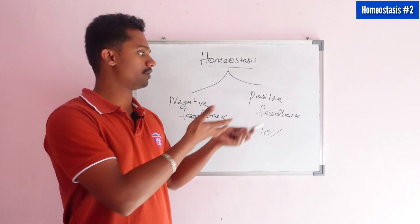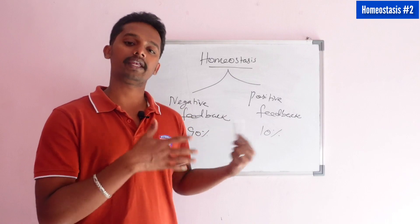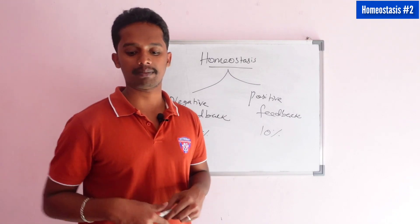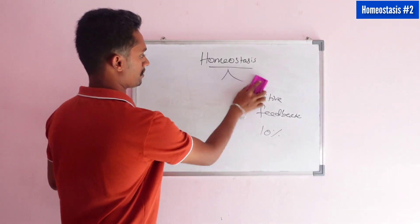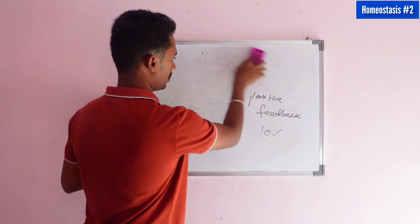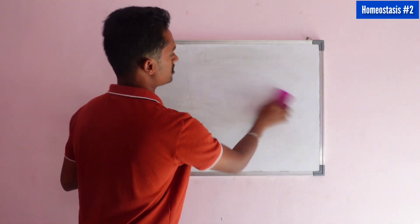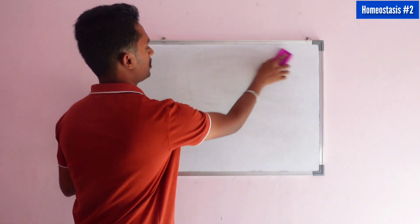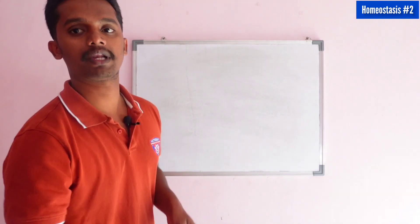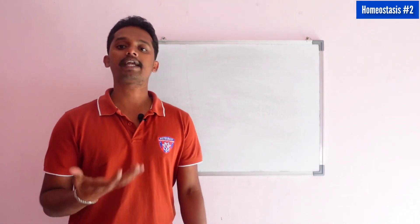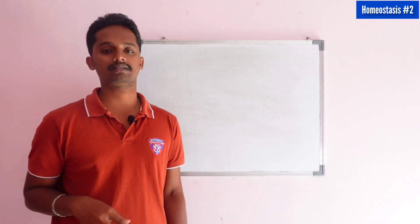Why is one called negative and the other positive? What is the difference? First, we can see the negative feedback mechanism because it is way more easy to understand compared to the positive one. Let's look at a broad example of negative feedback mechanism.